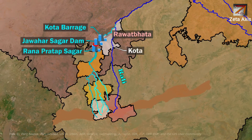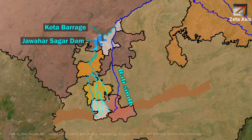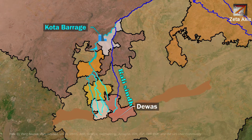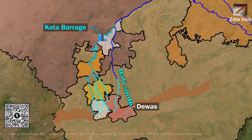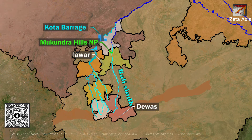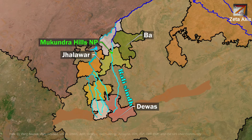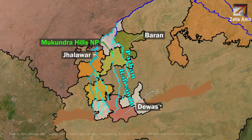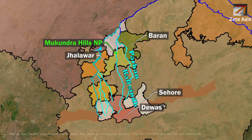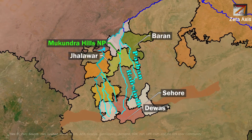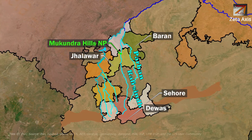Within Kota, the Kali Sindh river joins the Chambal river. The Kali Sindh river originates in the Vindhyachal mountains in Dewas district of Madhya Pradesh. Flowing north, it passes through Mukandhra Hills National Park in Jhalawar district. In Baran district, the Parwan river joins the Kali Sindh. The Parwan river originates from Sehore district. The Kali Sindh river then flows forward to join the Chambal in Kota district.